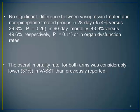It is worth mentioning that the overall mortality rate for both arms was considerably lower in the VAS trial than previously reported. The theory behind the trial assumed mortality would be around 50–60%, whereas in the study it was 37%. This is probably of unknown significance, but it is worth mentioning.